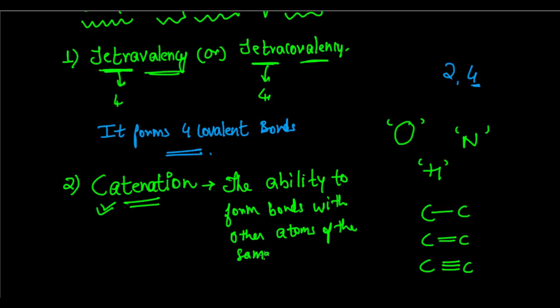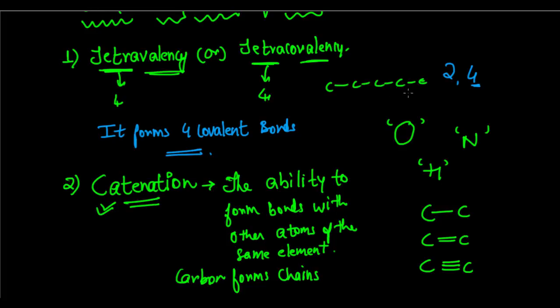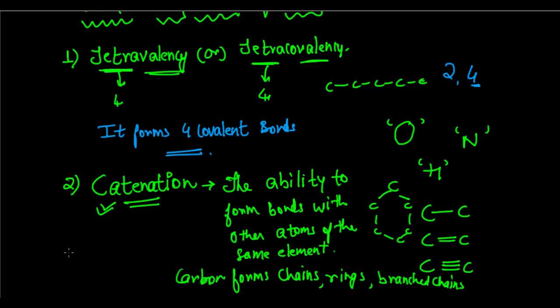Carbon shows the catenation property — it can form bonds with other carbon atoms. Due to catenation, carbon can form chains of carbon, rings of carbon, and branched chains. So a chain looks like a sequence of carbon atoms linked together, a ring connects them in a loop, and a branched chain has one main chain with branches coming off it.